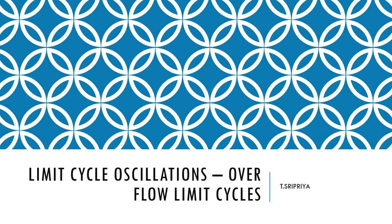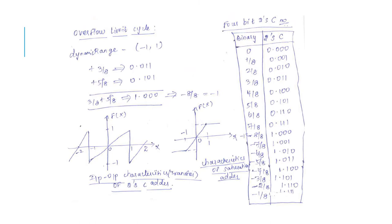In this session we are going to look at overflow limit cycles. In fixed point addition of two binary numbers, overflow occurs when the sum exceeds the finite word length of the register used to store them. The overflow in addition may lead to oscillations in the output, which we refer to as overflow limit cycles. The overflow occurs when the sum exceeds the dynamic range of the number system. When a binary fraction format is used for computing, the dynamic range is minus 1 to 1. This can be explained by considering a 4-bit binary fraction number in two's complement representation.